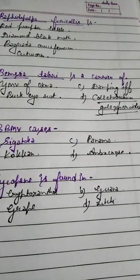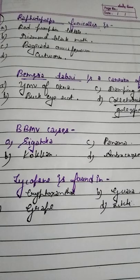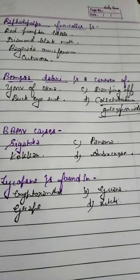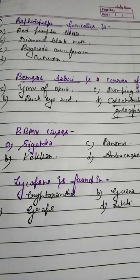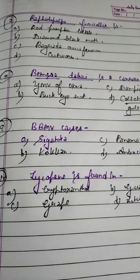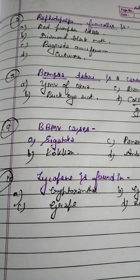Student, question number 8. Bemisia tabaci is a vector of — Option A: YMV of Okra, Option B: Buckeye rot, Option C: Damping off, Option D: Colletotrichum gloeosporioides. Colletotrichum gloeosporioides causes anthracnose of chillies. Buckeye rot is caused by Phytophthora in tomato. Damping off, a common disease of nursery, is also caused by Phytophthora. YMV of Okra — Bemisia tabaci is the vector.